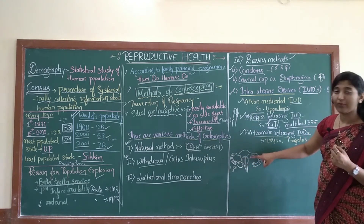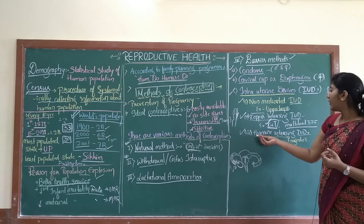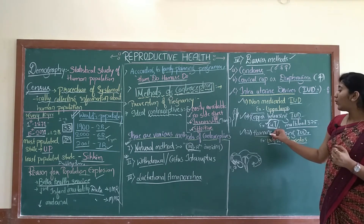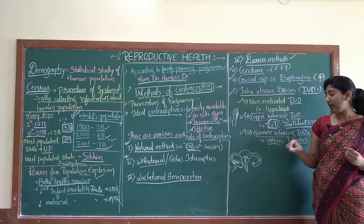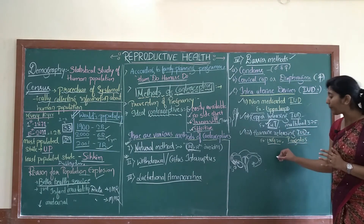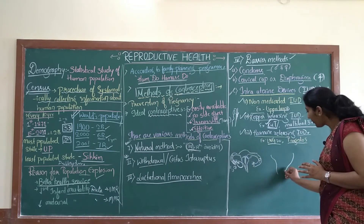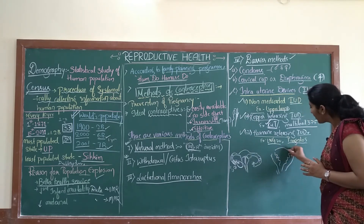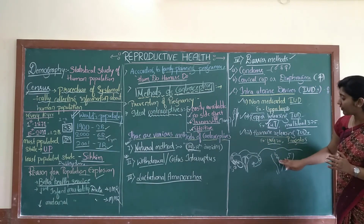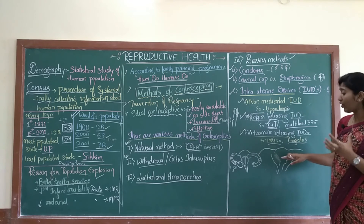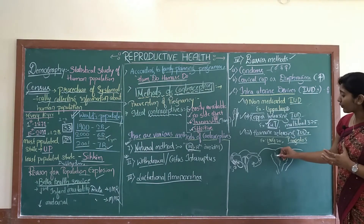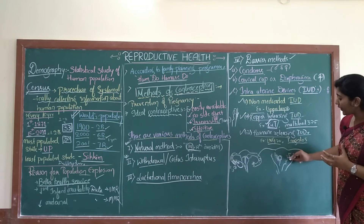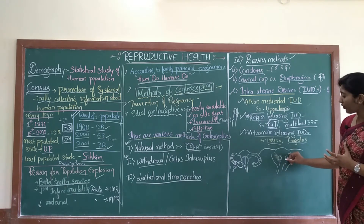The third type is hormone-releasing IUDs, such as LNG-20 and Progestasert. These IUDs release hormones into the uterus. Every month the female uterus prepares itself to hold an embryo by developing the endometrium. Hormone-releasing IUDs do not provide favorable conditions in the uterus for implantation of the developing embryo. Without a proper endometrium, the embryo cannot implant, and therefore there is no pregnancy.